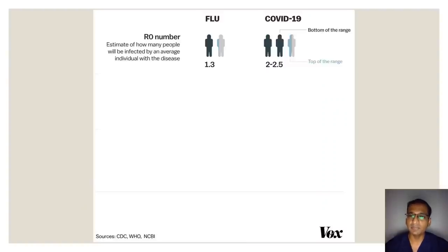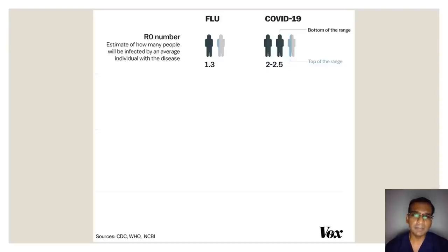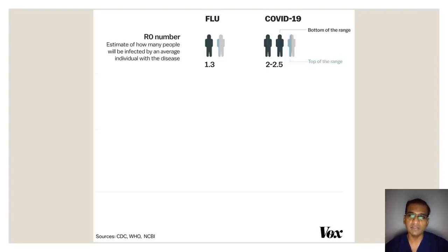This chart from the CDC compares the common flu versus COVID-19. First, the R-naught number — this indicates how many people one infected person can spread the virus to on average. With the flu it is 1.3, and with COVID-19 it is about 2.5. The number doesn't seem large until you multiply it over 10 generations: for the flu it becomes 56 people, and with an R-naught of 2.5, COVID-19 becomes over 2,000 people in 10 cycles. That is what is worrying us.